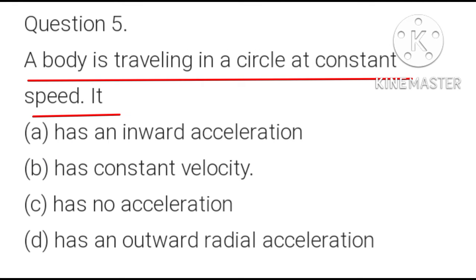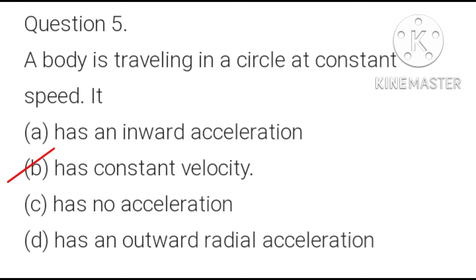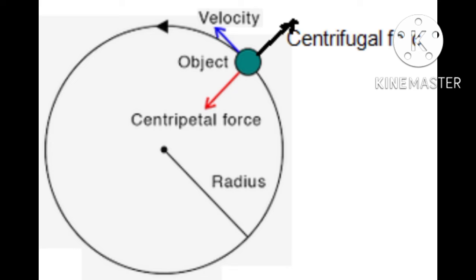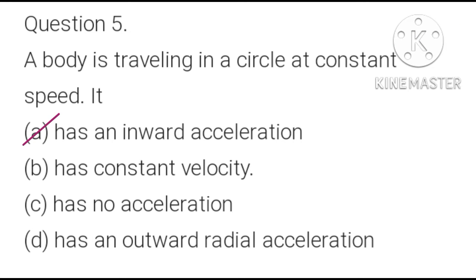Question 5: A body is travelling in a circle at constant speed. It: A) has an inward acceleration, B) has constant velocity, C) has no acceleration, D) has an outward radial acceleration. When an object moves in a circular path, there is a force acting toward the center known as centripetal force. If the speed of the body is constant, there is an acceleration in the inward direction. So A is the correct option: it has an inward acceleration.